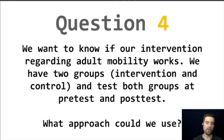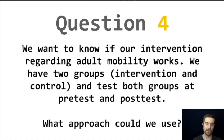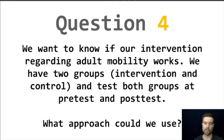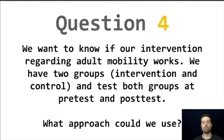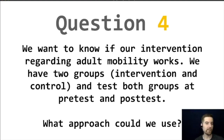Question four: we want to know if our intervention regarding adult mobility works. We have two groups — intervention and control — and we test both at pre-test and post-test. We have independent groups, but the twist is we also have pre-test and post-test, which is repeated measures. The only approach we've talked about in this class that can handle both independent and repeated measures is the mixed ANOVA.